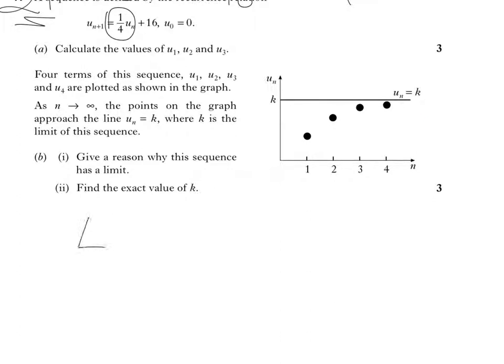If U_n is the limit, then U_{n+1} is the limit. So, we've got the limit equals 1 quarter of the limit plus 16. Bring that over, and we've got the limit minus 1 quarter of the limit is equal to 16.